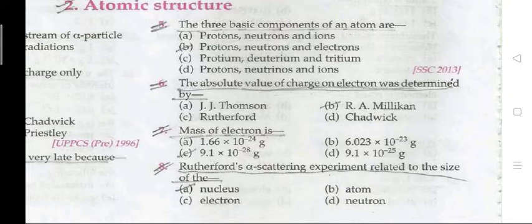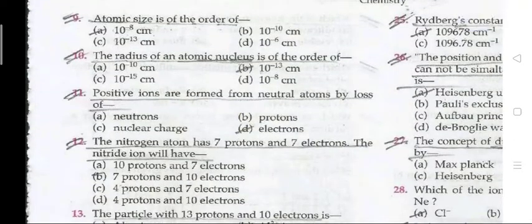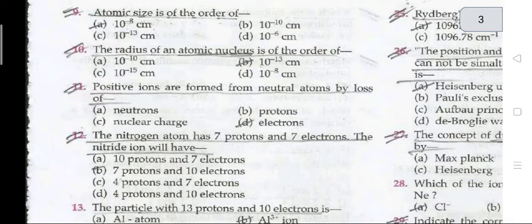Question 6: the absolute value of charge on an electron was determined by R.A. Millikan. Question 7: mass of electron is 9.1 × 10^-28 g. Question 8: Rutherford's alpha scattering experiment is related to the size of the nucleus.